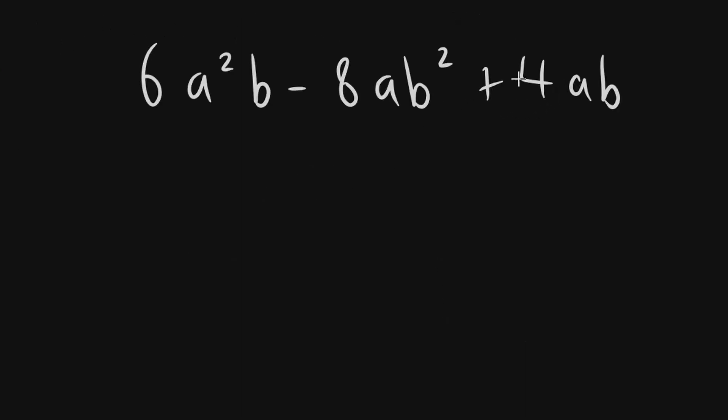Now what about when you have three terms? You look at the first number and you find what is the highest common factor. Well, the highest common factor of 6, 8, and 4 would be 2. And you also look at the letters. What is the highest common factor of all of these? Well, ab goes into all three of these. So 2ab would be your highest common factor.